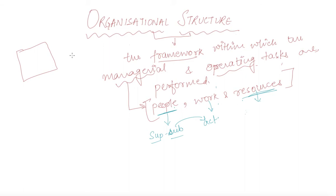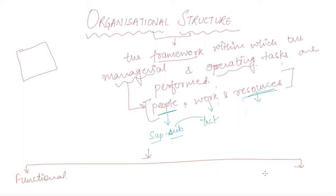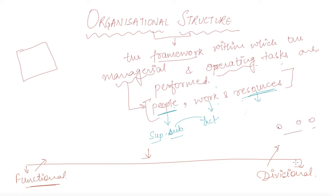Furthermore, if we discuss organizational structure, it is categorized in two types. The first one is your functional structure and the second one is your divisional structure. As per the name, when the structure of the organization is divided as per the functioning of the organization, it will be named as functional structure. And when it is divided as per different activities, it is named as divisional structure.